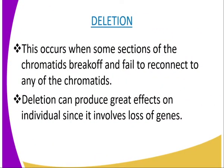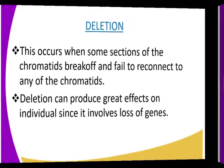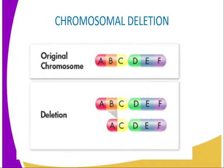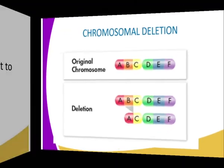We are going to start with the first type of chromosomal mutation, which is deletion. As I explain, let us look at the following diagrammatic presentation. Deletion occurs when some sections of the chromatids break off and fail to reconnect to any of the chromatids. In this case, these sections are completely lost and the genetic material they contain is said to be deleted.